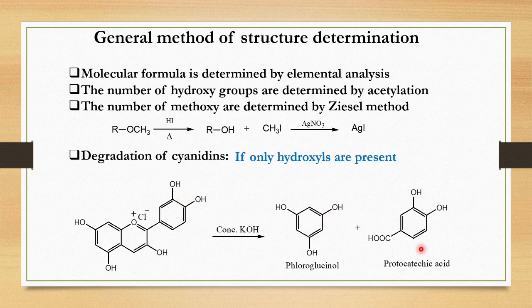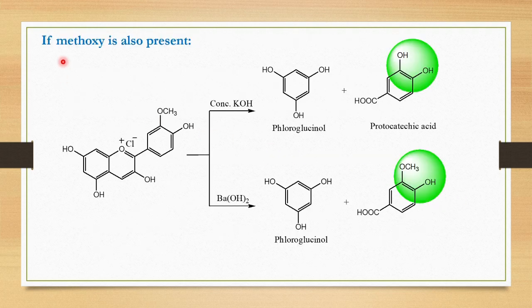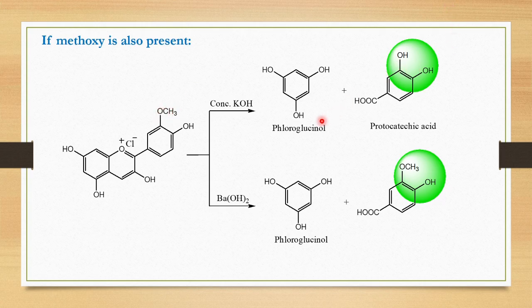In phloroglucinol, the two hydroxyls are those already present at the 5 and 7 positions, and one hydroxyl is produced when the C ring is cleaved. In the case of protocatechuic acid, the carboxyl group is formed when the C ring is cleaved, and the two hydroxyls were present in the parent compound. So by knowing that the C ring cleavage produces a hydroxyl and a carboxyl group, we can establish the positions of the four hydroxyls in the parent compound. However, if methoxy is present and we treat with concentrated KOH, we again get phloroglucinol and protocatechuic acid because the methoxy is also hydrolyzed to hydroxyl — so we cannot distinguish whether methoxy was present in the parent compound.